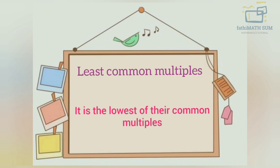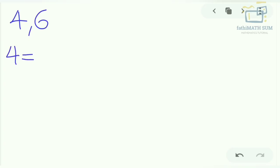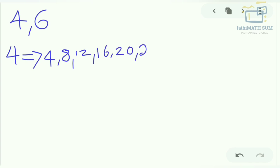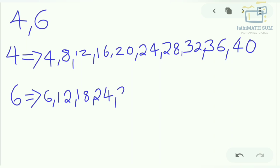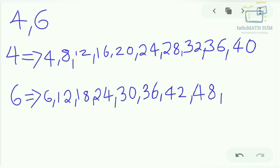Let's discuss LCM with the example of two numbers. Let's take 4 and 6 and list out the multiples of these two numbers. The multiples of 4 are: 4, 8, 12, 16, 20, 24, 28, 32, 36, 40, and so on. The multiples of 6 are: 6, 12, 18, 24, 30, 36, 42, 48, 54, 60, and so on.